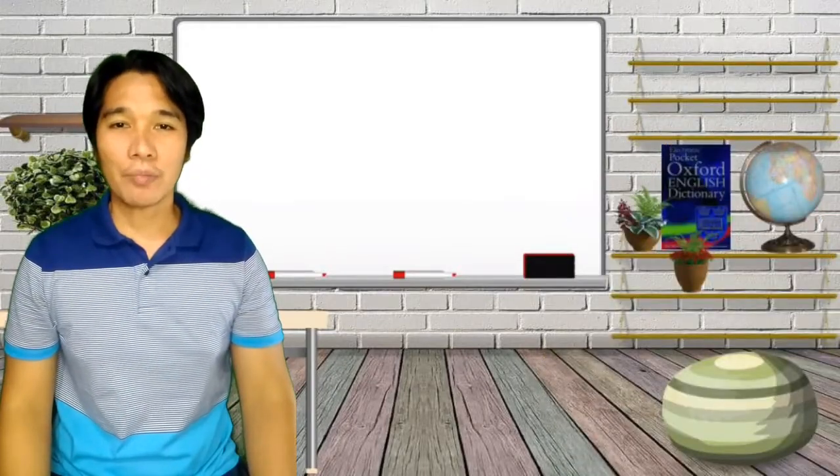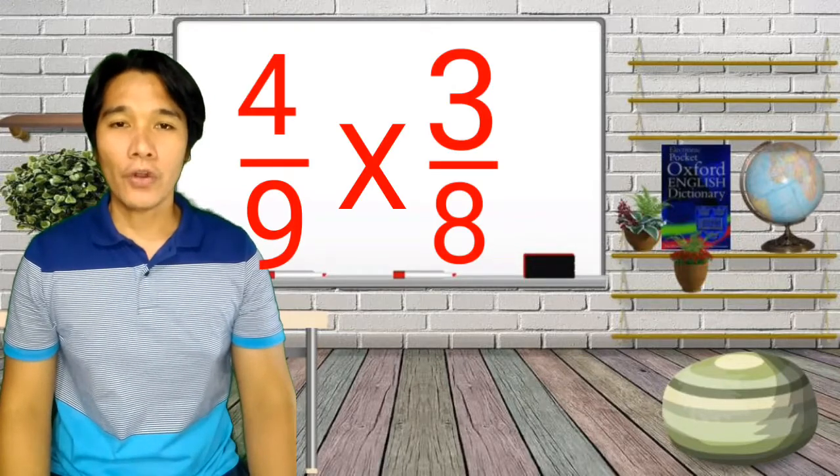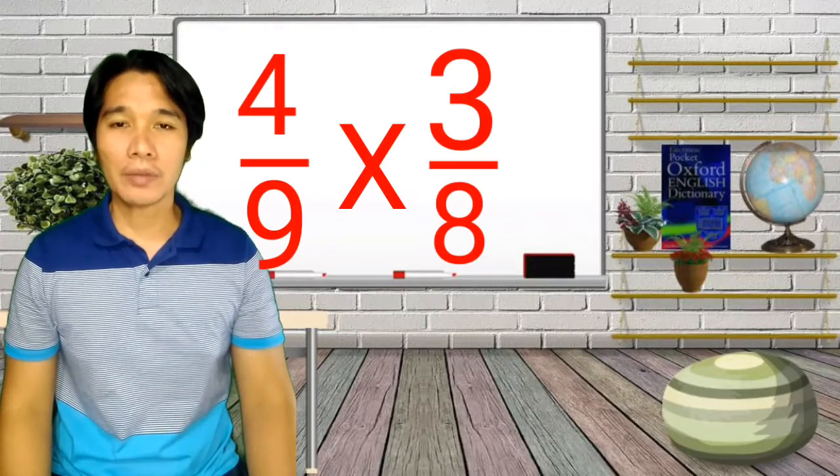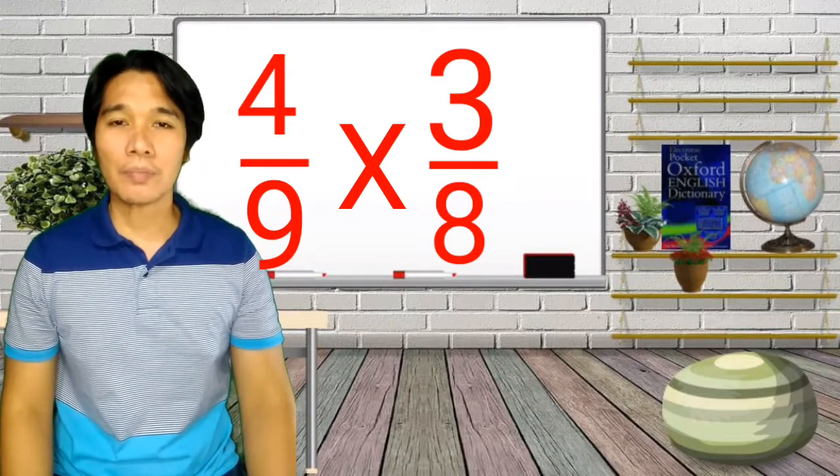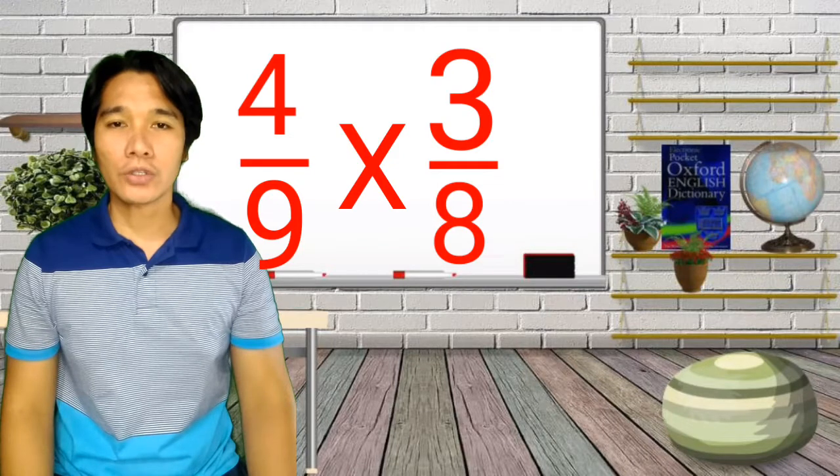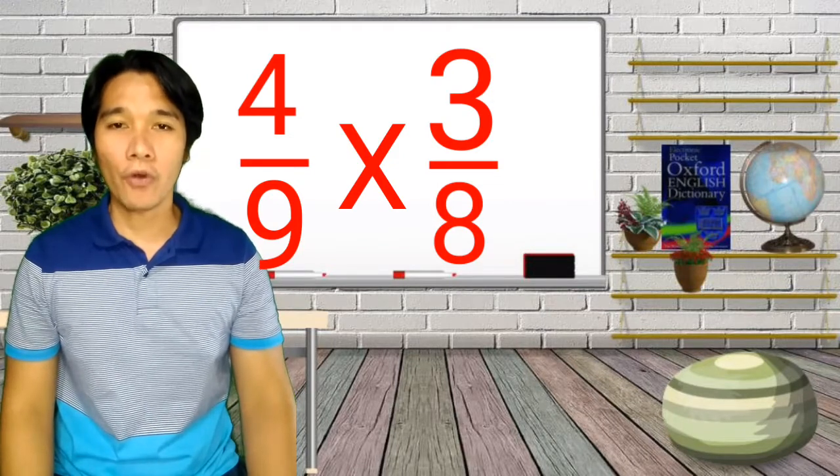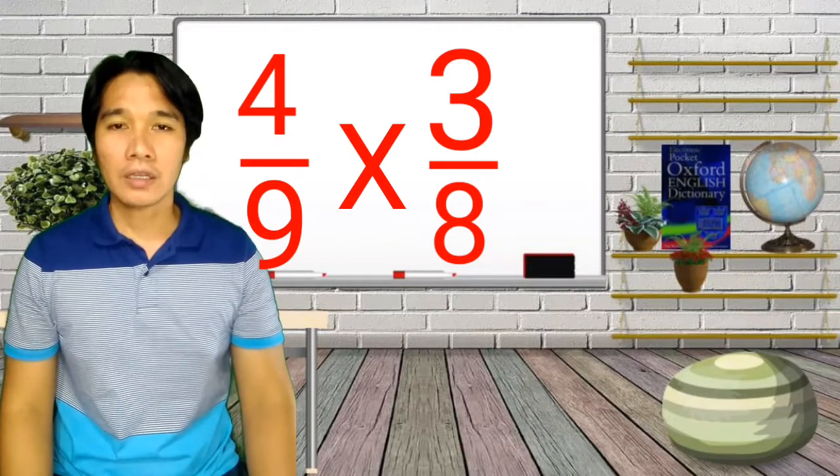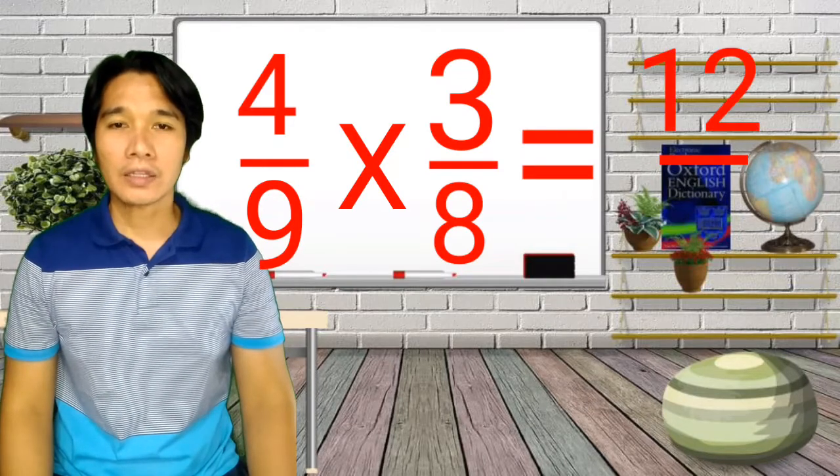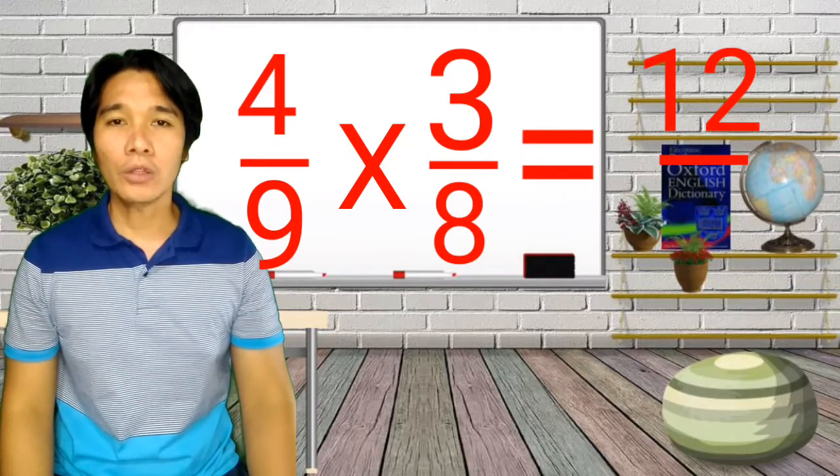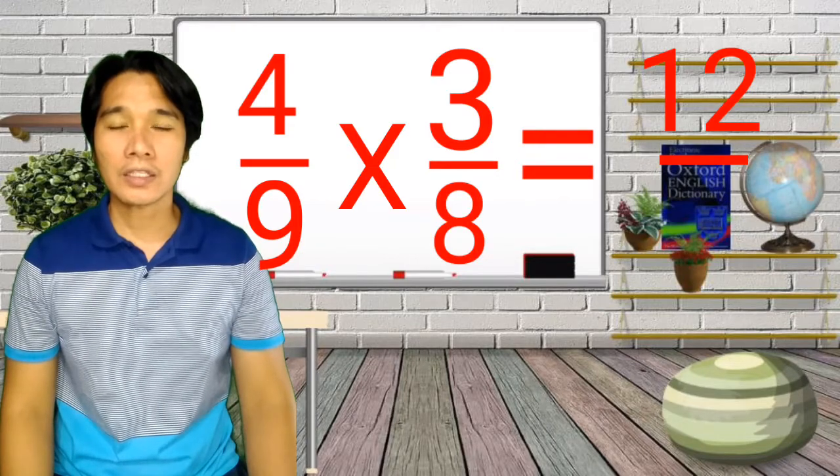Okay, time for another example. Let's try 4 ninths multiplied by 3 eighths. So, the first step is multiply both numerator. So, we have 4 times 3, we have 12. And then, 9 times 8, we all know that the product is 72.